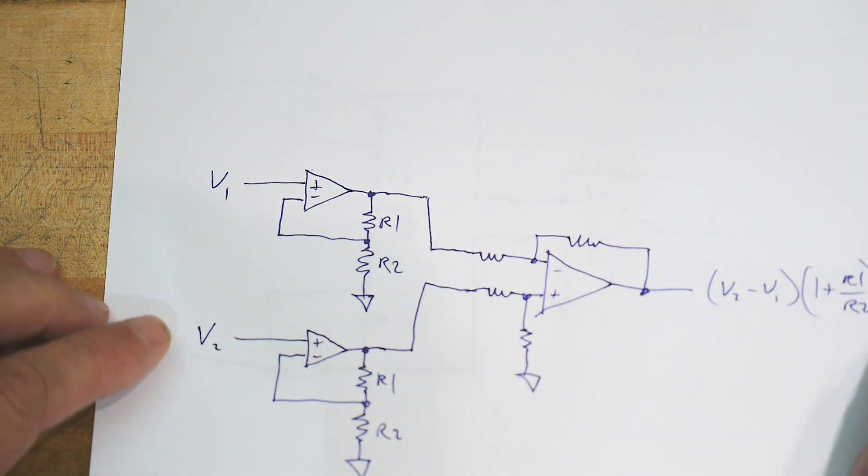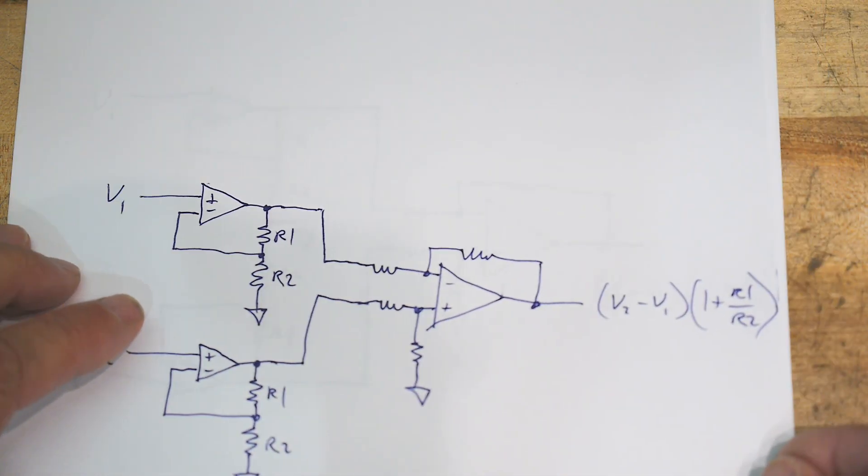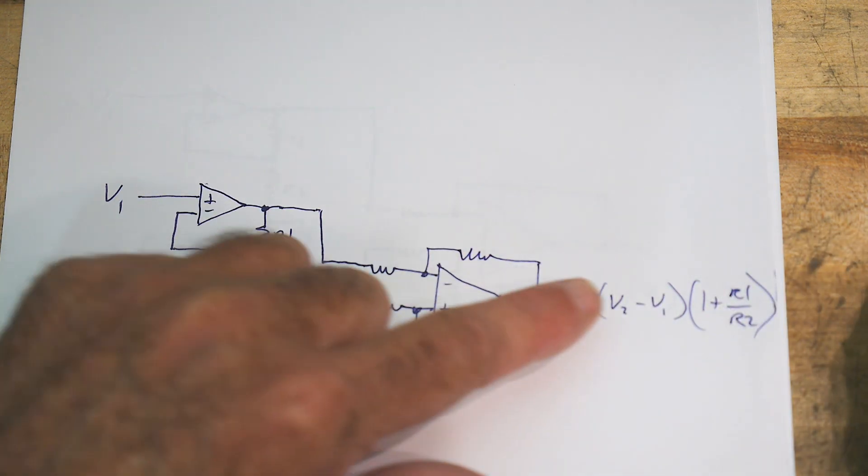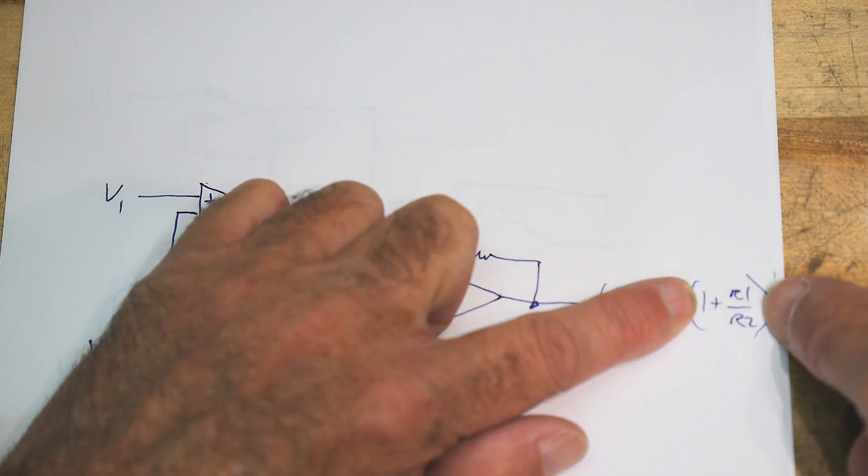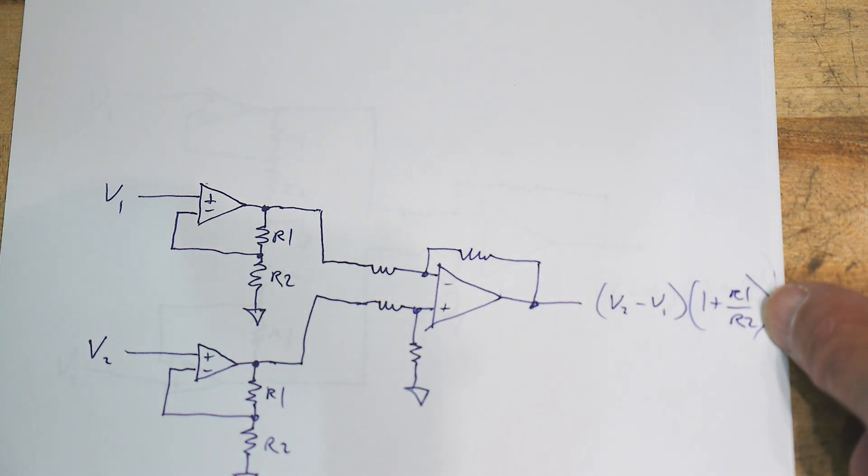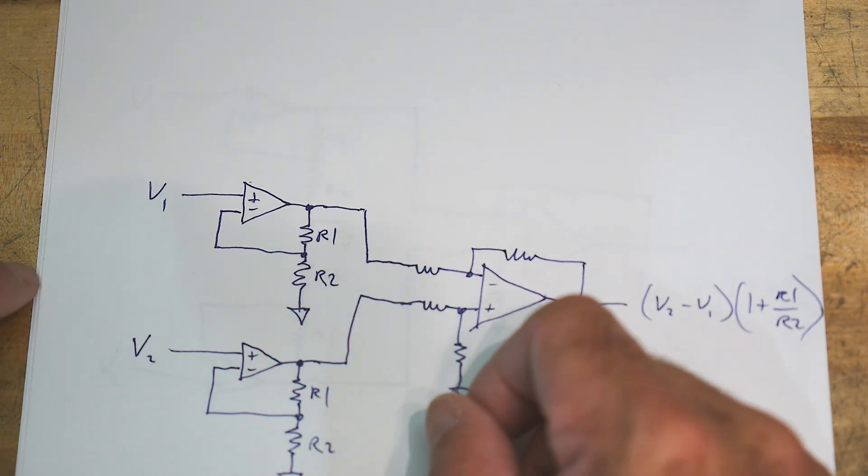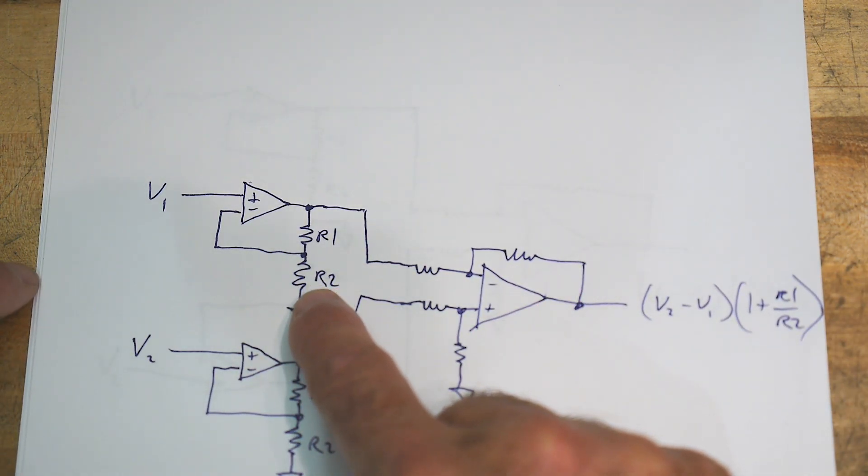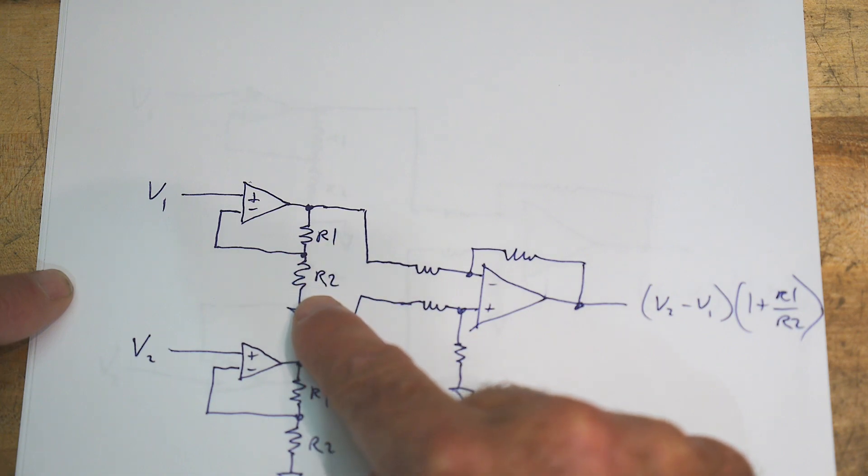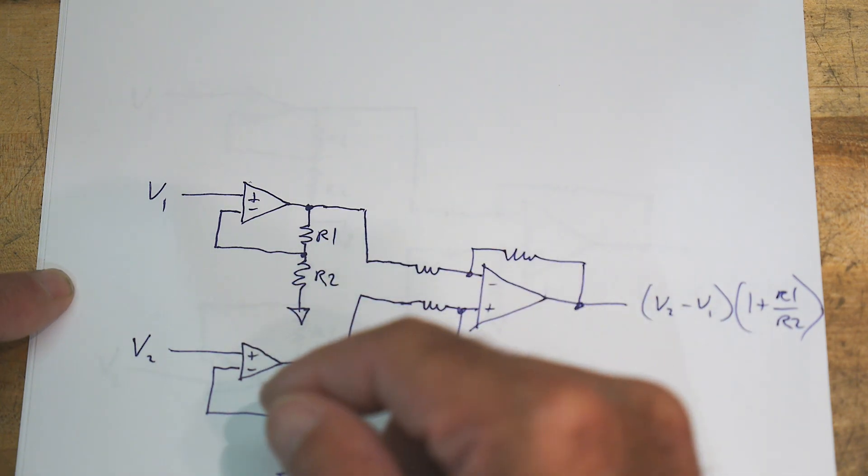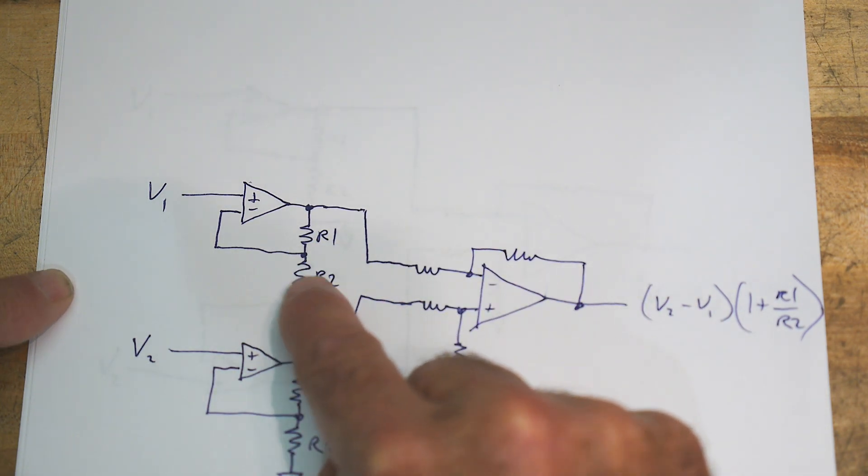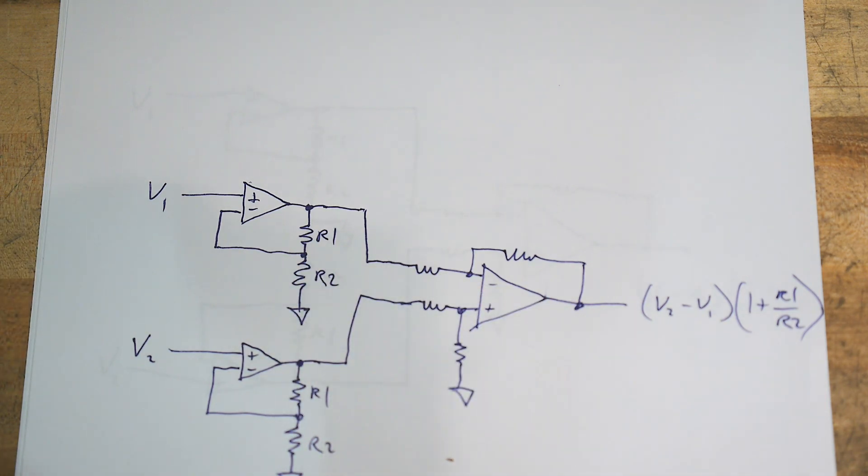The output then is V2 minus V1 times the gain of one of the stages, which is 1 plus R1 over R2. Another way of looking at it is it's R1 plus R2 divided by R2, so the total resistance divided by the smaller resistor - that's the gain.